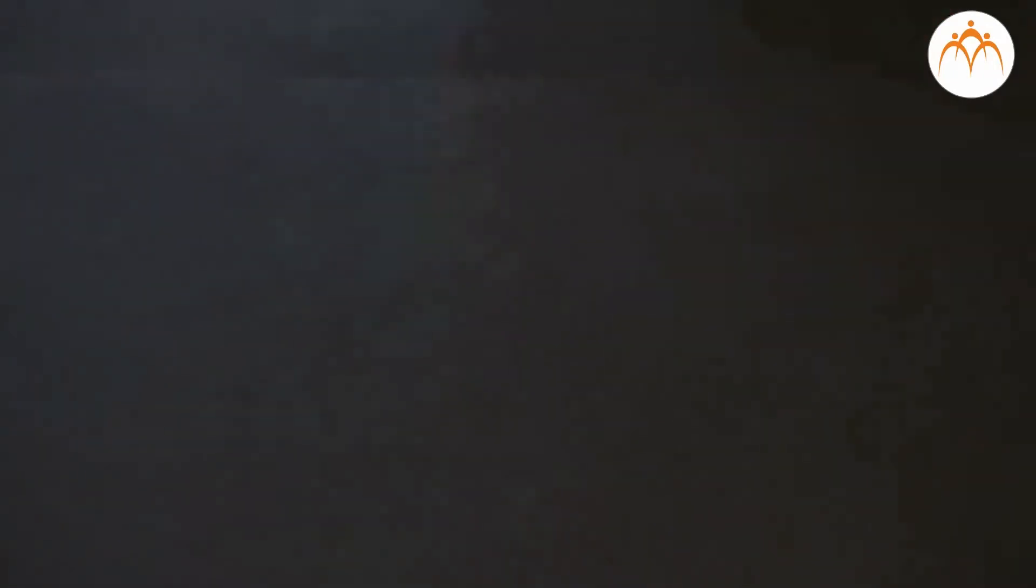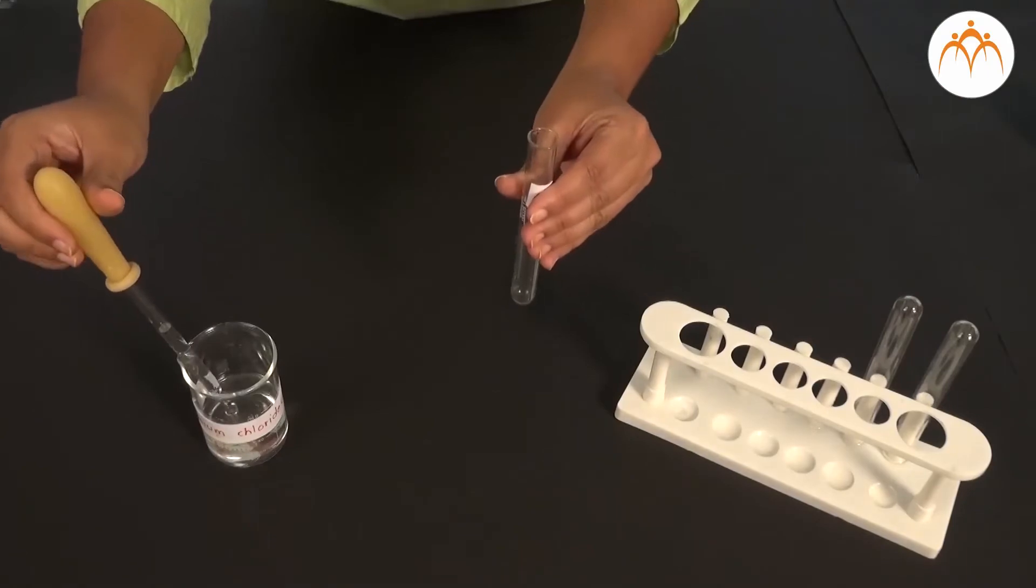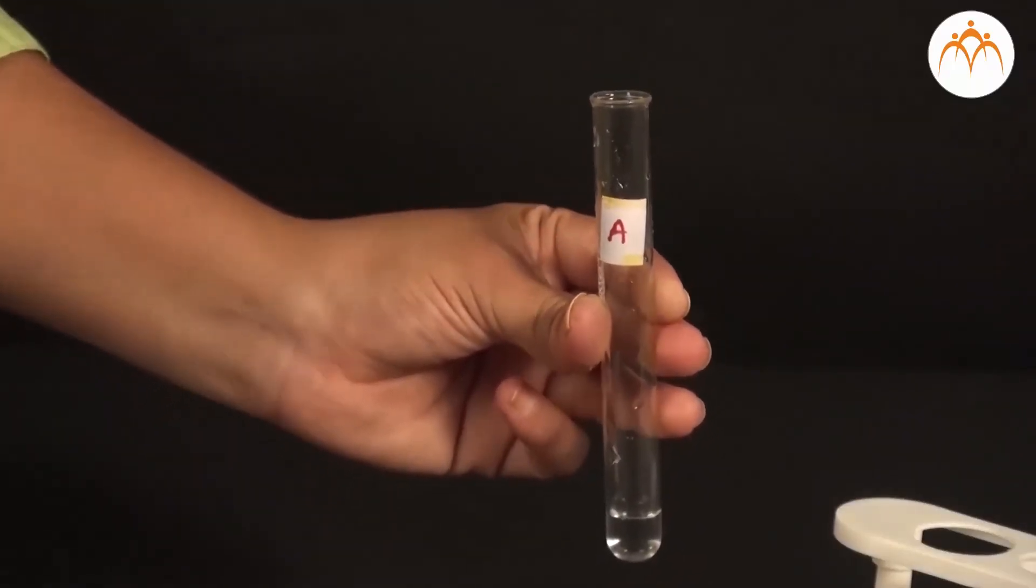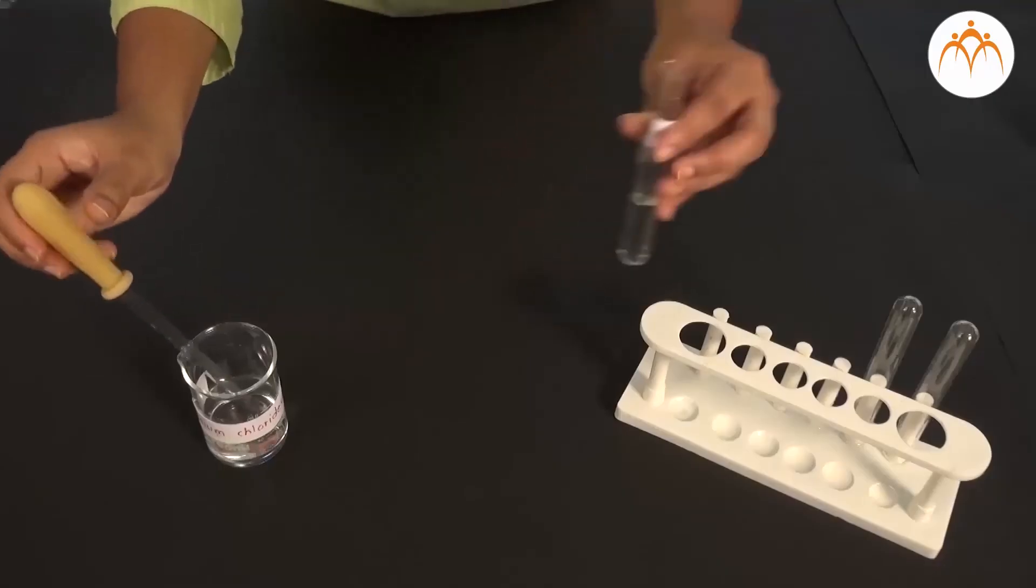Now we want to find out what they really contain. Which test tube contains chloride, which test tube contains bromide and which test tube contains iodide.